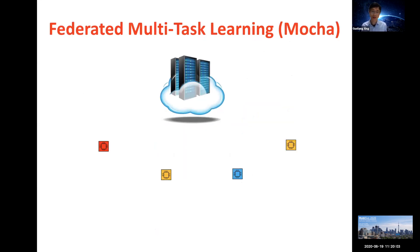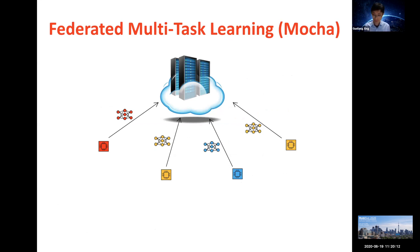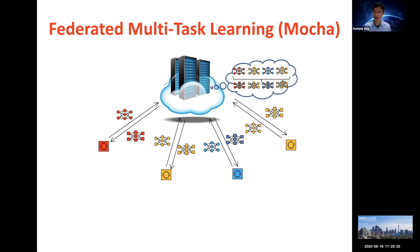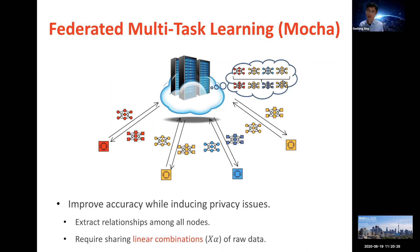A second idea from the literature is called multi-task learning, where we try to learn multiple models from different nodes. The server aggregates those models into multiple ones and sends them back, and the local nodes can improve these models locally. Studies show this can indeed improve accuracy. But the challenge is that to capture the common features or relationships between different nodes, you need to send more information than just local models. A common approach is to share a linear combination of raw data, which can lead to a high risk of privacy breach because you can reconstruct at least part of the original data from such a linear combination.